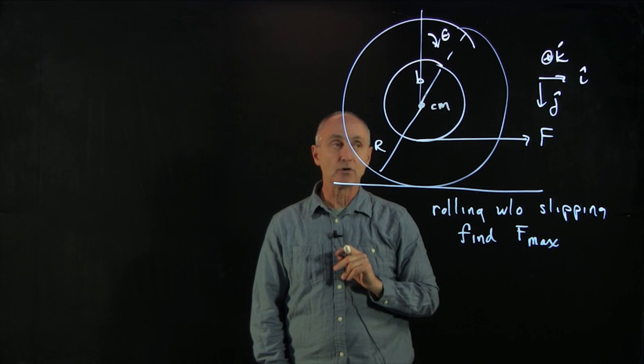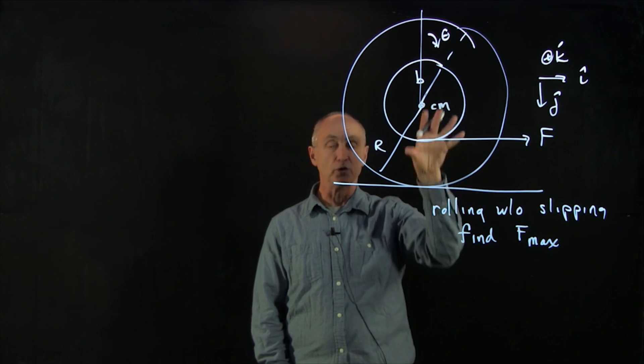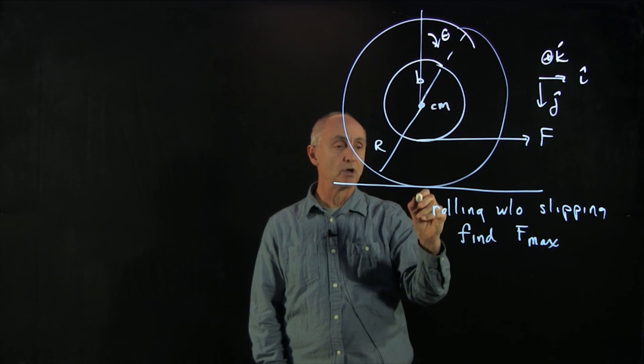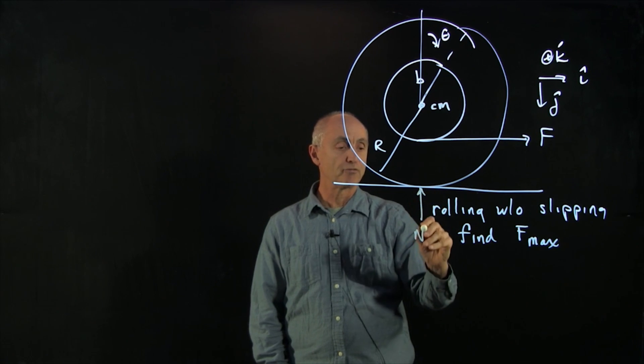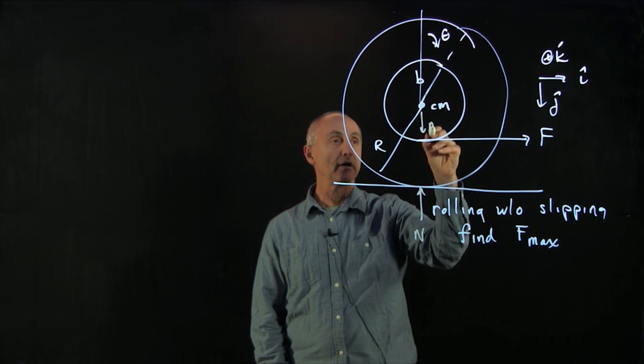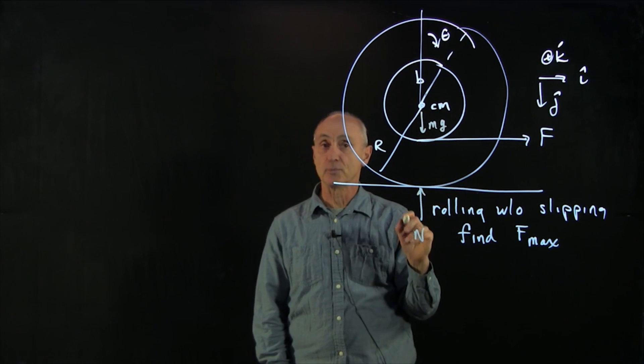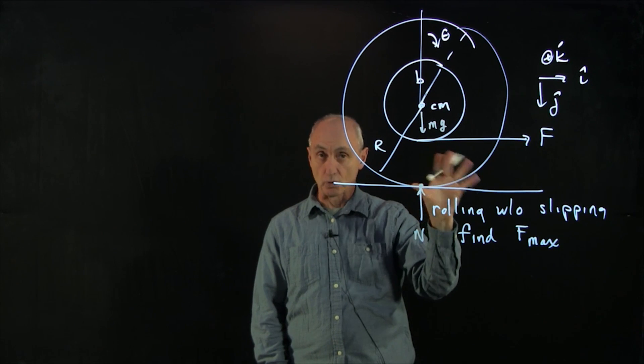Now we have to consider our forces. So I'm going to put the forces on this diagram. We have the normal force from the ground pointing up. We have the gravitational force pointing down. And remember, it's rolling without slipping.